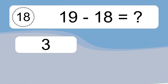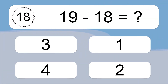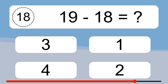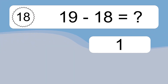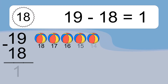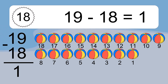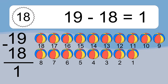19 minus 18 equals what? 19 minus 18 equals 1. Let's count it: 18, 17, 16, 15, 14, 13, 12, 11, 10, 9, 8, 7.